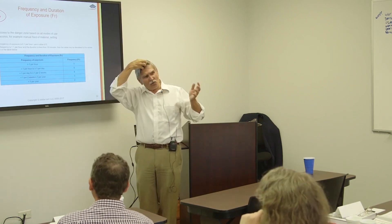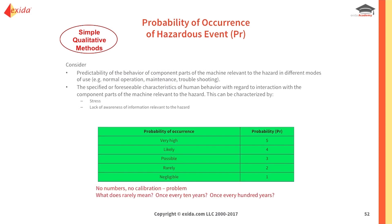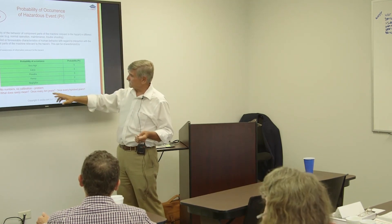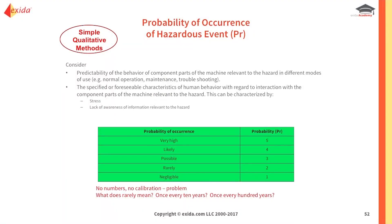For frequency — how often is a worker exposed — less than once per year gets two points, and it goes up to five points. That's occupancy in effect. For probability of occurrence, the categories are words like 'negligible' and 'rarely possible.' Whatever the words mean to individual people, you pick a number and get some points. The problem is there's no calibration. What does 'rarely' mean — once every ten years or once every hundred years? Your group must decide that up front, typically in a corporate procedure.